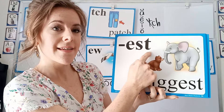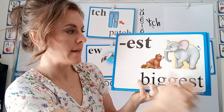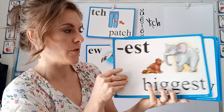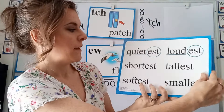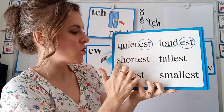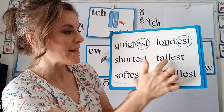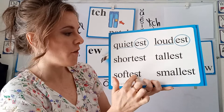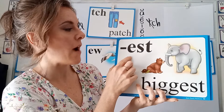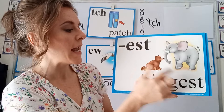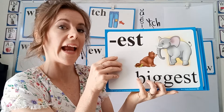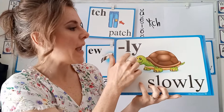EST in biggest — the elephant is the biggest of the animals. Quietest, loudest, shortest, tallest, softest, smallest. This is our special sound suffix that comes at the end of a root word to make a new word.